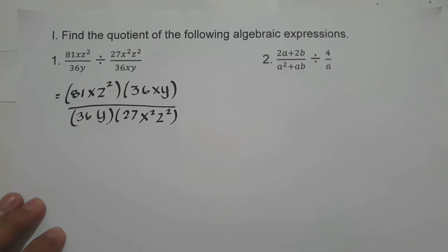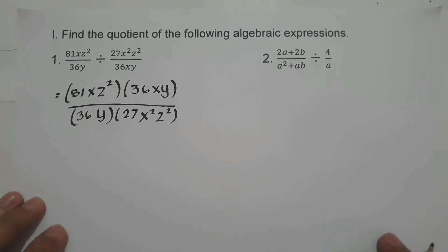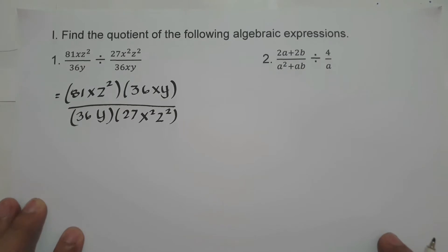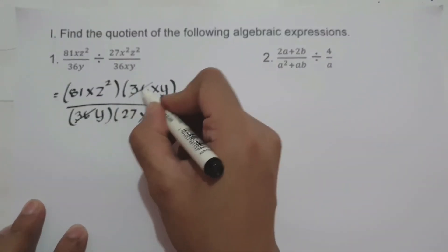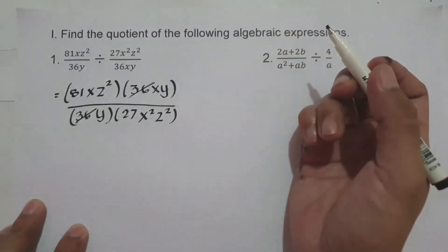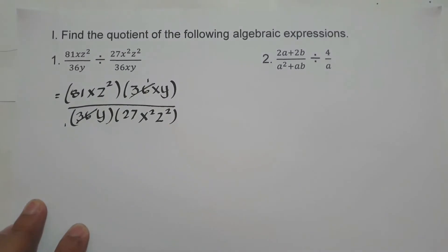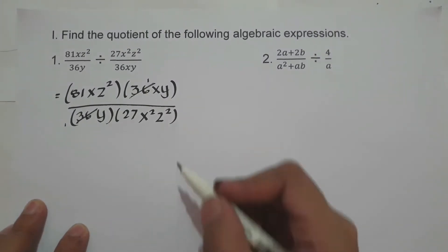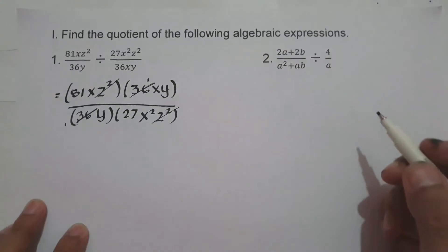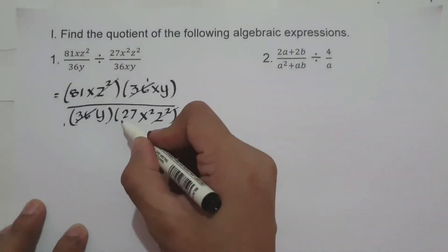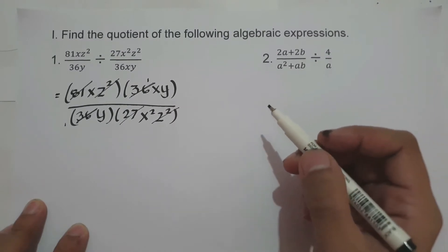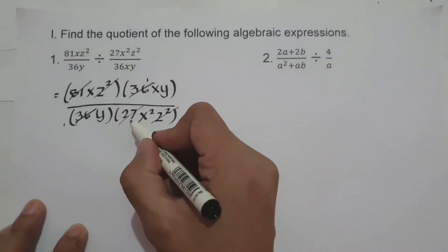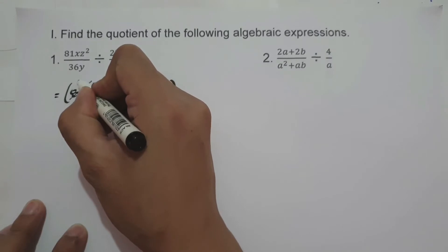Now, what are the coefficients and variables that can be written in simplest form? So 36 and 36 can be cancelled. Then z² and z² can be cancelled. We have 27 and 81 — the greatest common factor of 27 and 81 is 27, so 27 becomes 1 and 81 becomes 3.